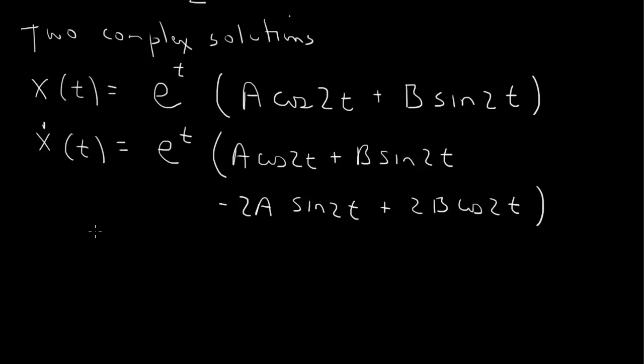And then we have the initial conditions. So we have x of 0 equal to 1 as part of the specification of the problem. So substituting t equal to 0 here, this e to the 0 is 1, cosine 0 is 1, sine 0 is 0, so we end up with a equal to 1.